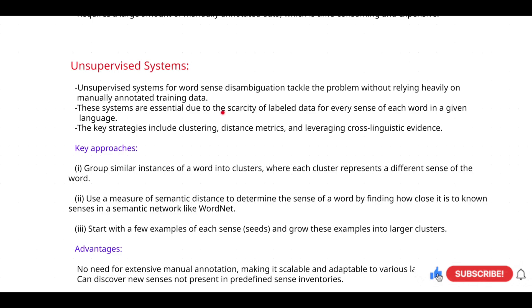The third point is the key strategies include clustering, distance metrics, and leveraging cross-linguistic evidence. These are nothing but algorithms. Maybe you have some idea about k-means clustering algorithms. There you are going to create different clusters based on the given dataset. After finding those clusters, whenever you give new data to that algorithm, it will predict to which cluster that particular thing is belonging. So that is what is meant by clustering. If you want more information about k-means clustering, go and check any YouTube videos available. You don't need very deep information, but if you have general info, that is enough.